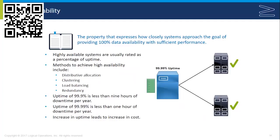Another property is high availability — the property that expresses how closely systems approach the goal of providing 100% data availability with sufficient performance. It is measured in nines and relates to unscheduled downtime versus uptime. For example, four nines — 99.99% uptime — is less than one hour of unscheduled downtime per year, while 99.9% uptime is less than nine hours of downtime per year. To achieve this, we implement redundancy, a distributive allocation of software, clustering for automatic failover, and load balancing. We eliminate single points of failure so the loss of one component does not render the system failed.